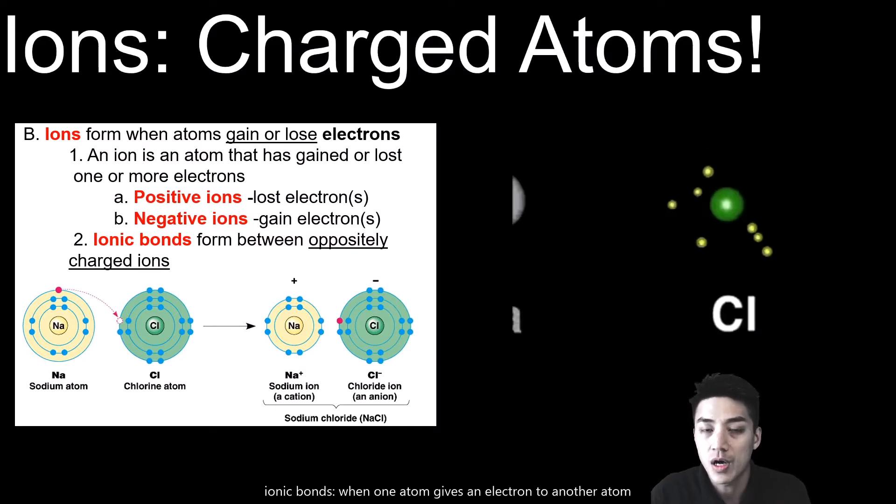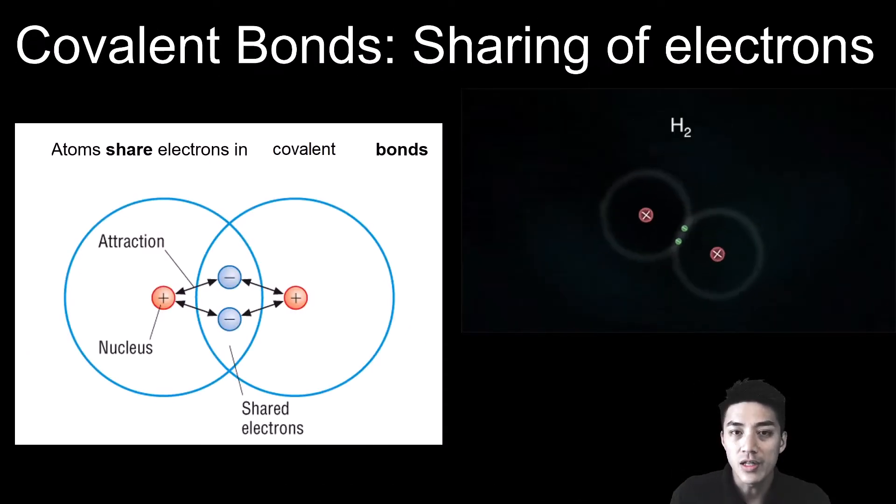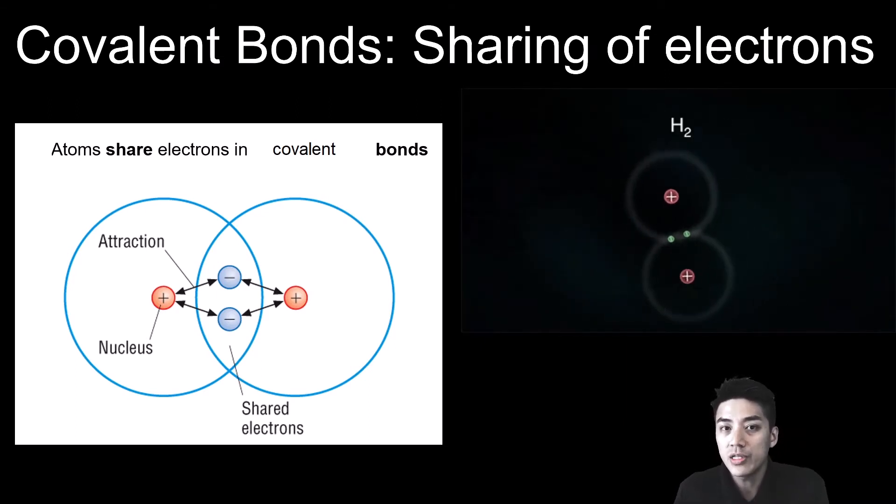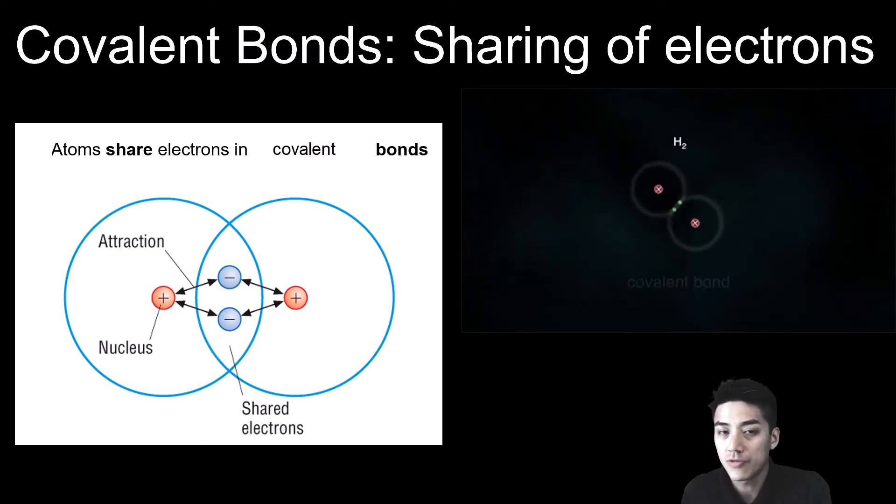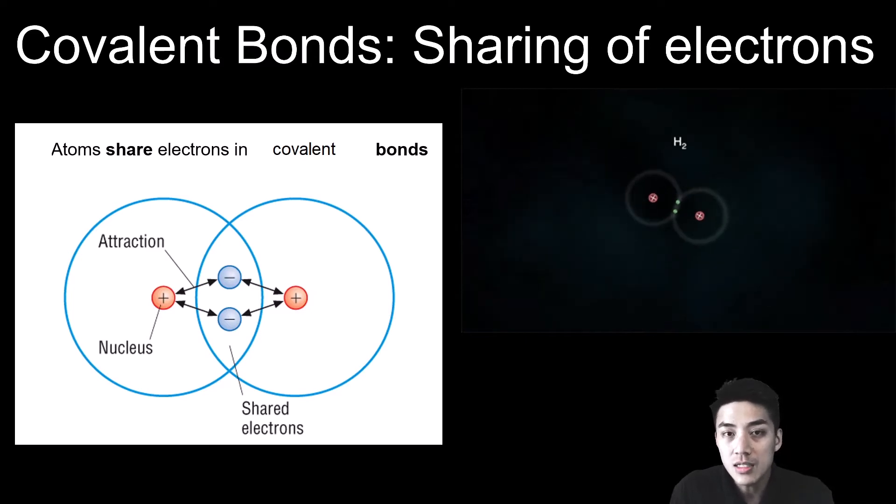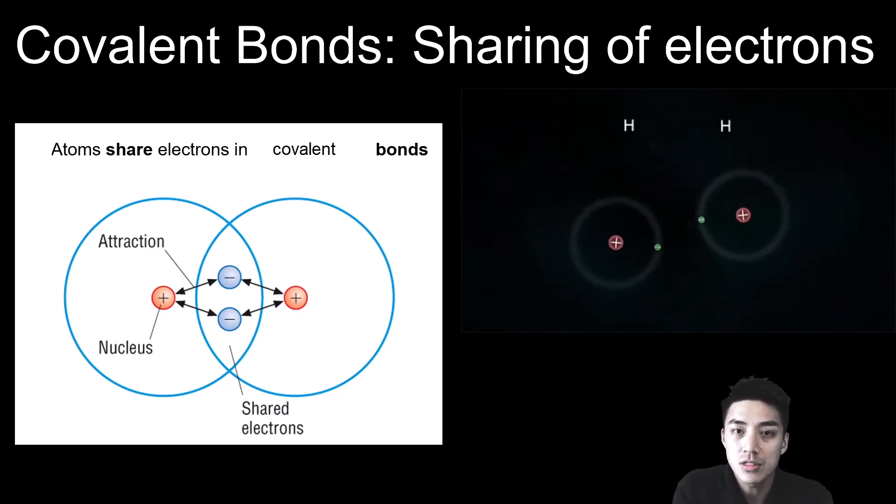Covalent bonding is a sharing of electrons. It's different from ionic bonds, where one atom just completely gives up its electron to a different atom. In covalent bonding, two atoms are sharing electrons. You can see in the illustration how these hydrogen atoms are sharing electrons to form a bond.